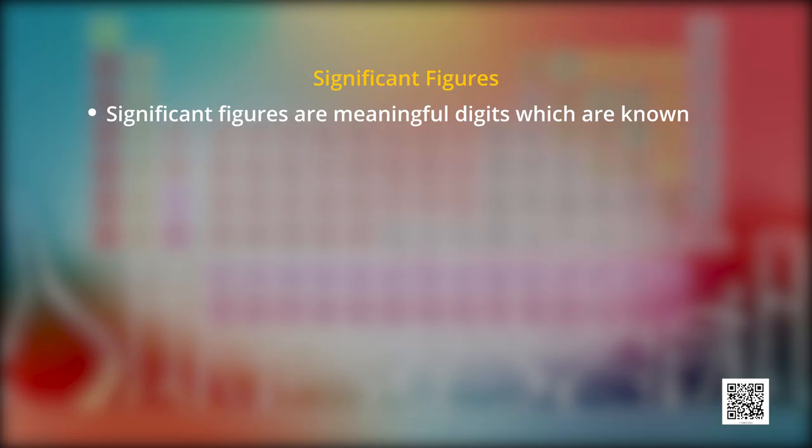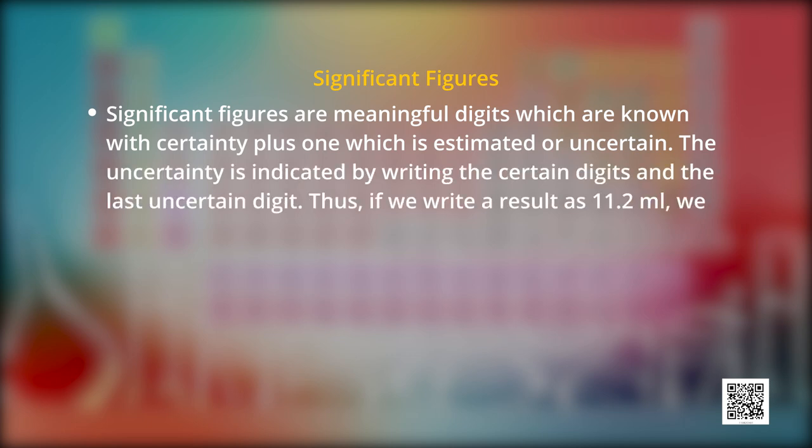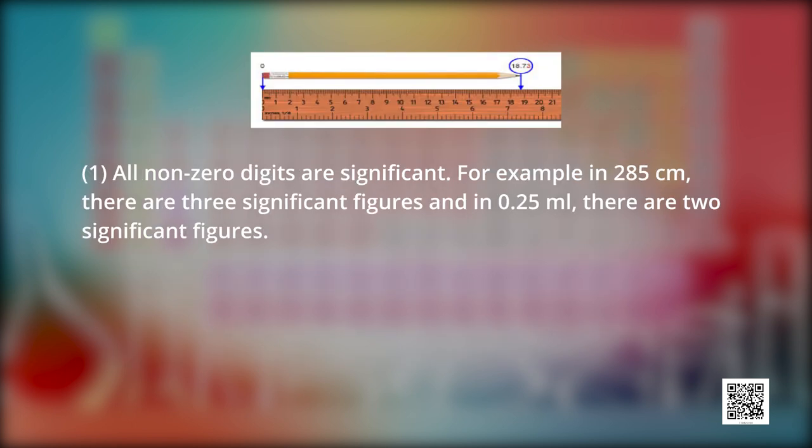For example, mass of an object is obtained using a platform balance and it comes out to be 9.4 gram. On measuring the mass of this object on an analytical balance, the mass obtained is 9.4213 gram. Significant figures are meaningful digits which are known with certainty plus one which is estimated or uncertain. The uncertainty is indicated by writing the certain digits and the last digit uncertain. Thus, if we write a result 11.2 milliliter, we say that 11 is certain and 2 is uncertain, and the uncertainty would be plus one in the last digit. Children, now we will learn certain rules for determining the number of significant figures.